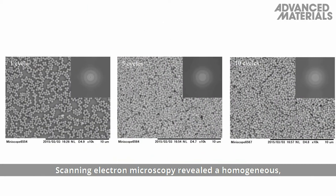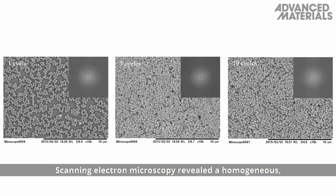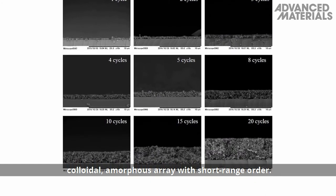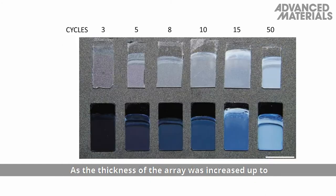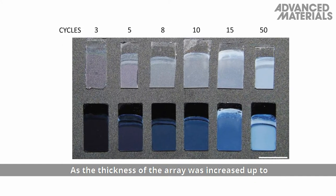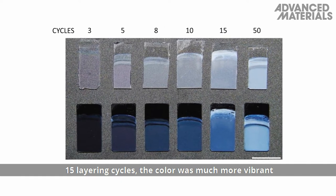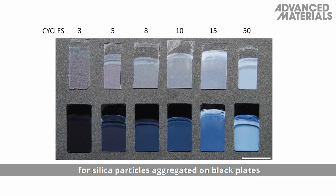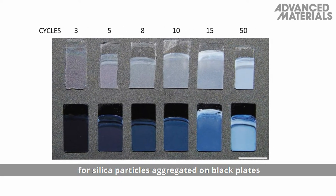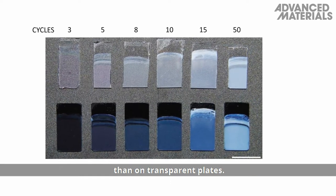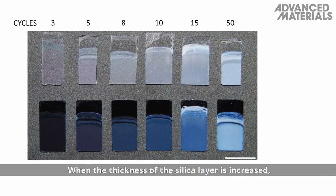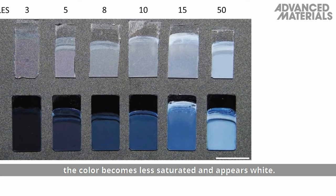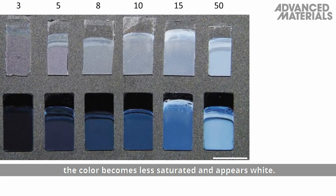Scanning electron microscopy revealed a homogeneous colloidal amorphous array with short-range order. As the thickness of the array was increased up to 15 layering cycles, the color was much more vibrant for silica particles aggregated on black plates than on transparent plates. When the thickness of the silica layer is increased, the color becomes less saturated and appears white.